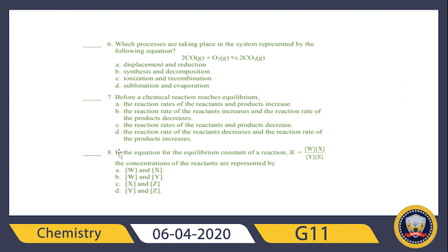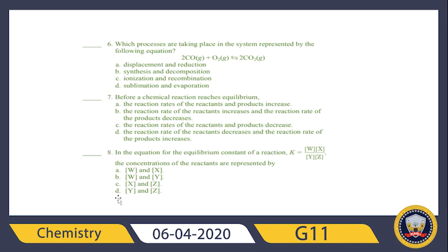Question eight: in the equation for the equilibrium constant, K equals the concentration of products over the concentration of reactants. So in the equilibrium constant expression, the reactants are represented by Y and Z. The correct answer can be identified from the given expression.